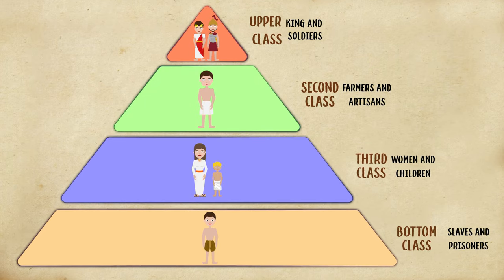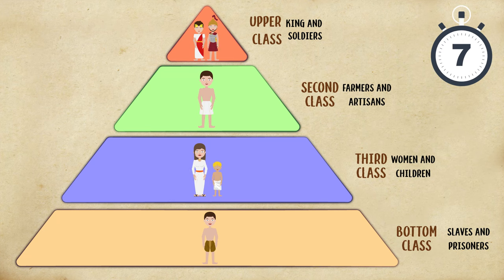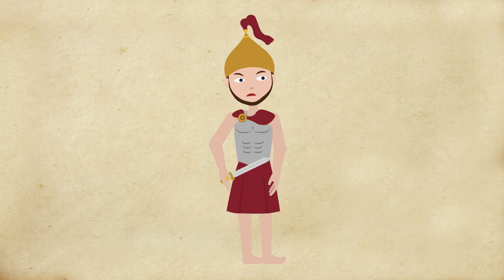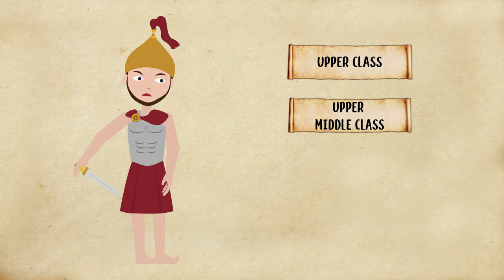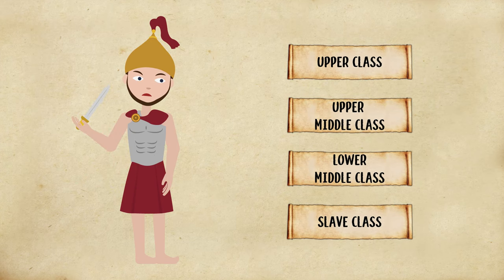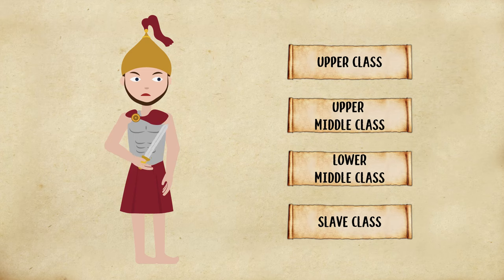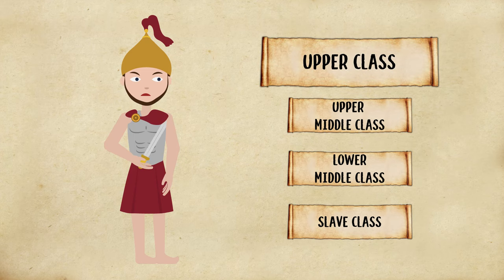In this game, you'll try to predict the social classes to which a character belongs based on their actions. First, quickly familiarize yourself with the class members and their roles. This is Adrian. Based on his actions, to which ancient Greece social class does he most likely belong? Is he part of the upper class, upper middle class, lower middle class, or slave class? That's right — he's a Greek soldier, which means he's most likely a member of the upper class.